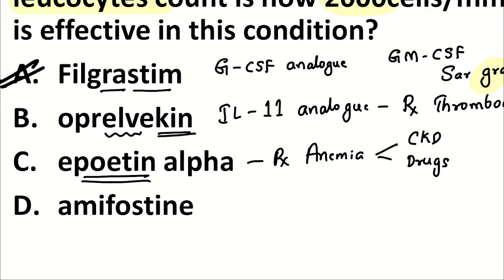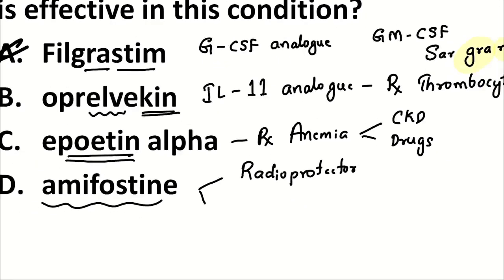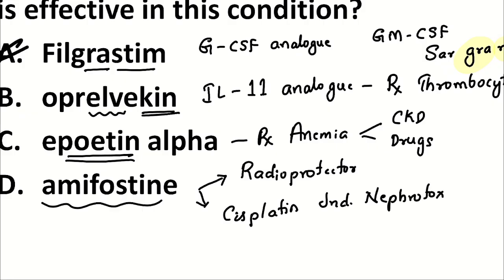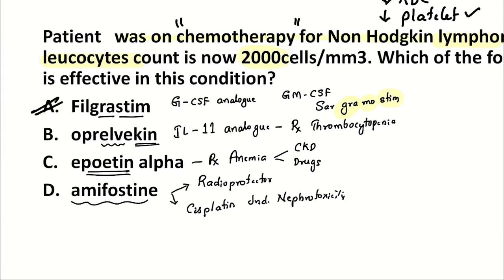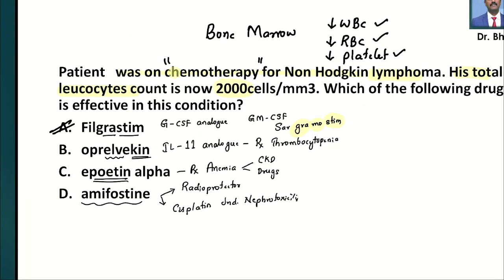Amifostine has two properties: it is a radioprotector drug, and it also has cytoprotective properties, so it is used to prevent cisplatin-induced nephrotoxicity. So from this MCQ, we understand that when we give anti-cancer therapy, there can be a decrease in WBC, RBC, and platelets, and we now know which drugs to use to manage each of those complications.